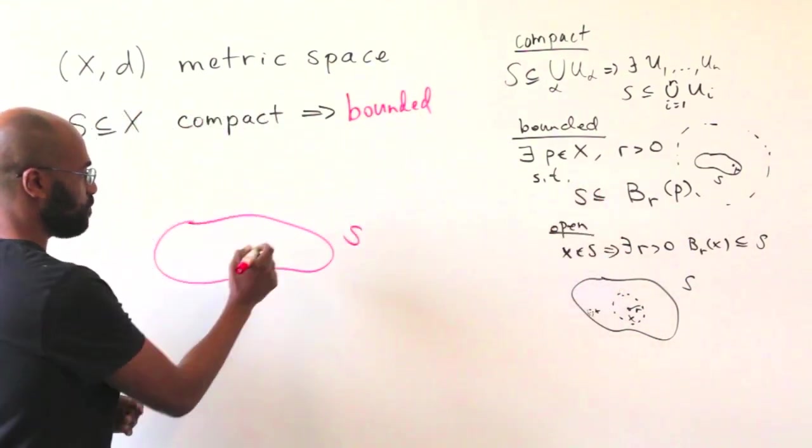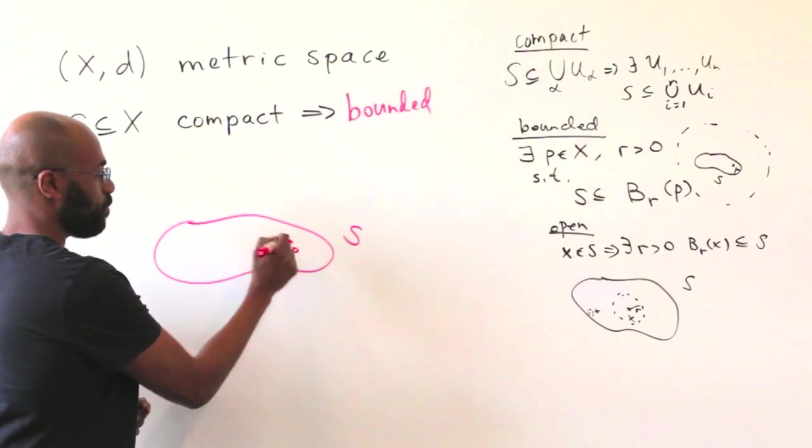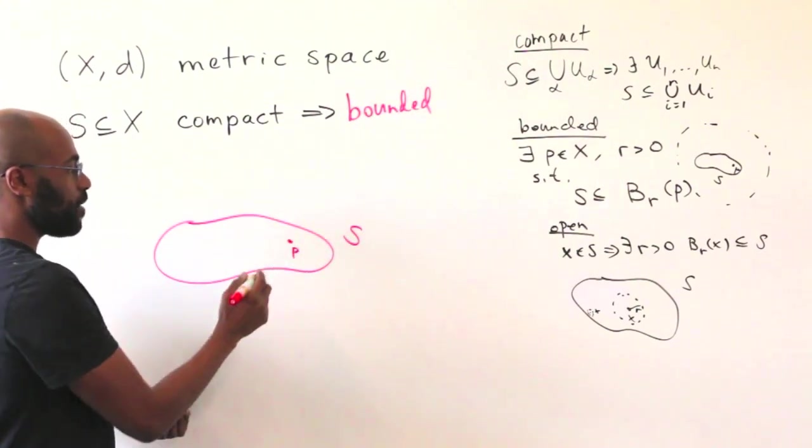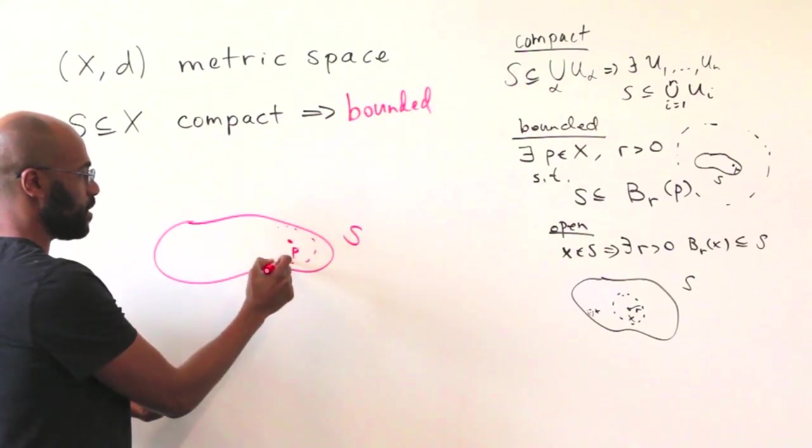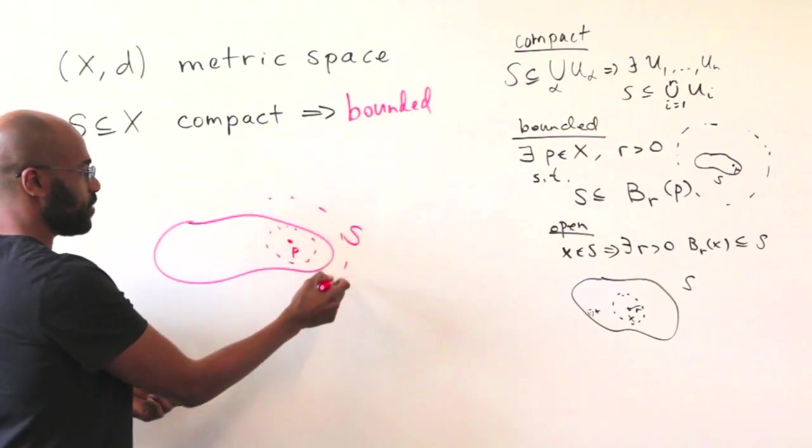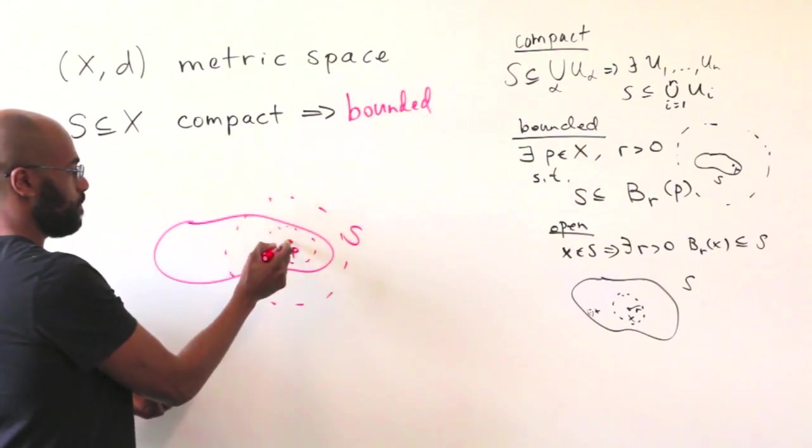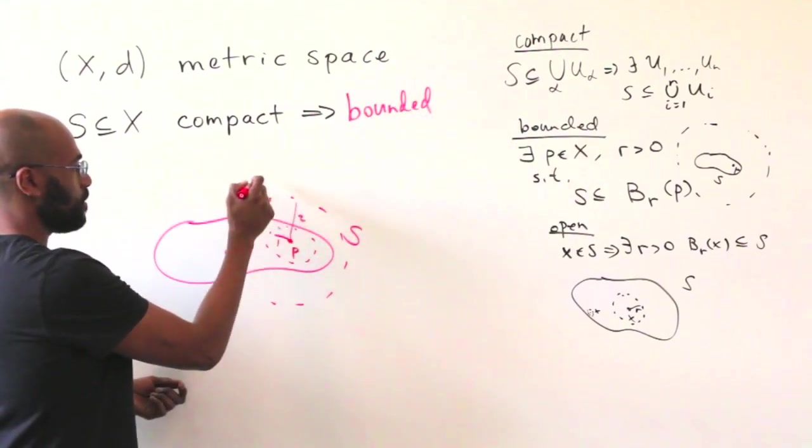One way we could do this is pick just some arbitrary point, I'll just pick a point right over here, and think about balls of different radii starting with counting numbers. So maybe a ball of radius 1, and then a ball of radius 2, a ball of radius 3, etc.